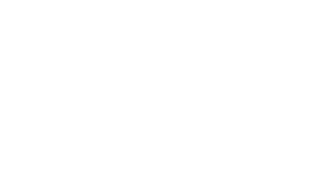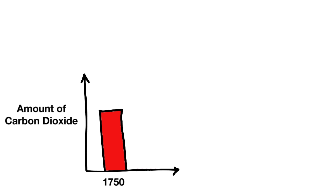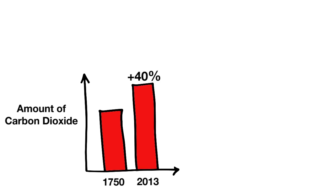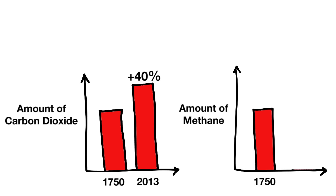So, how have humans changed things? Since the dawn of the industrial age, around the year 1750, atmospheric carbon dioxide has increased by 40%, and methane has almost tripled.